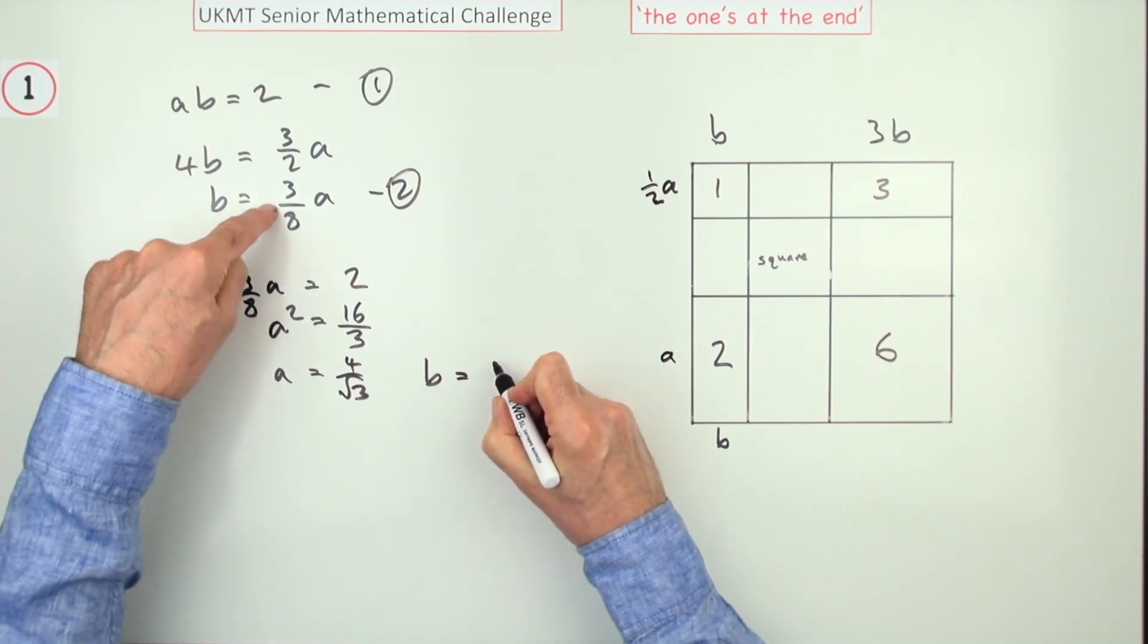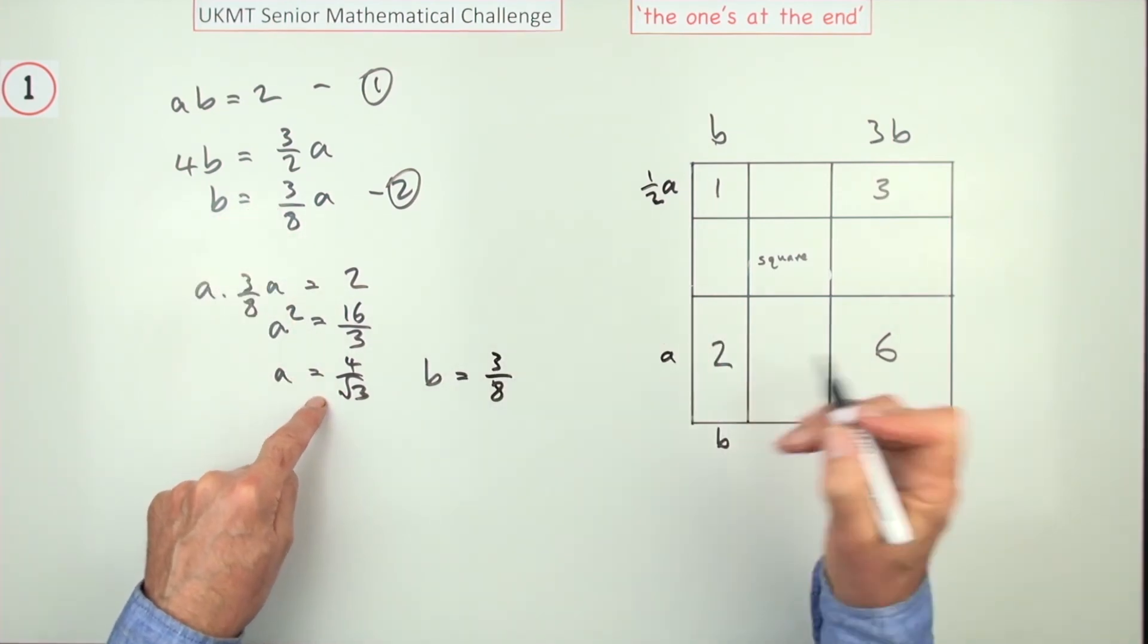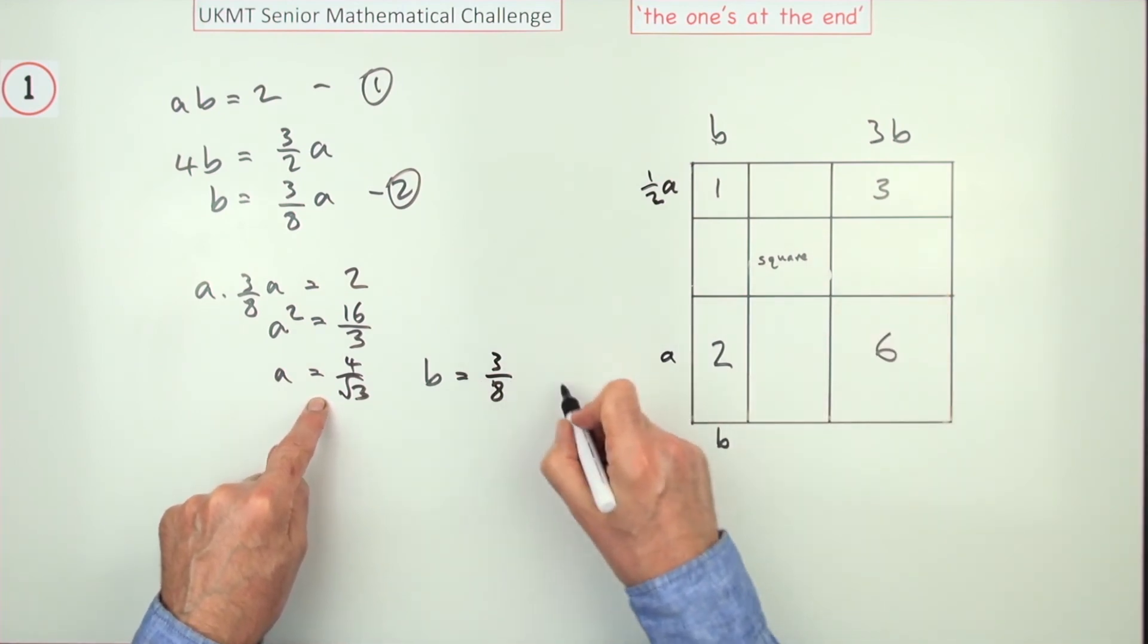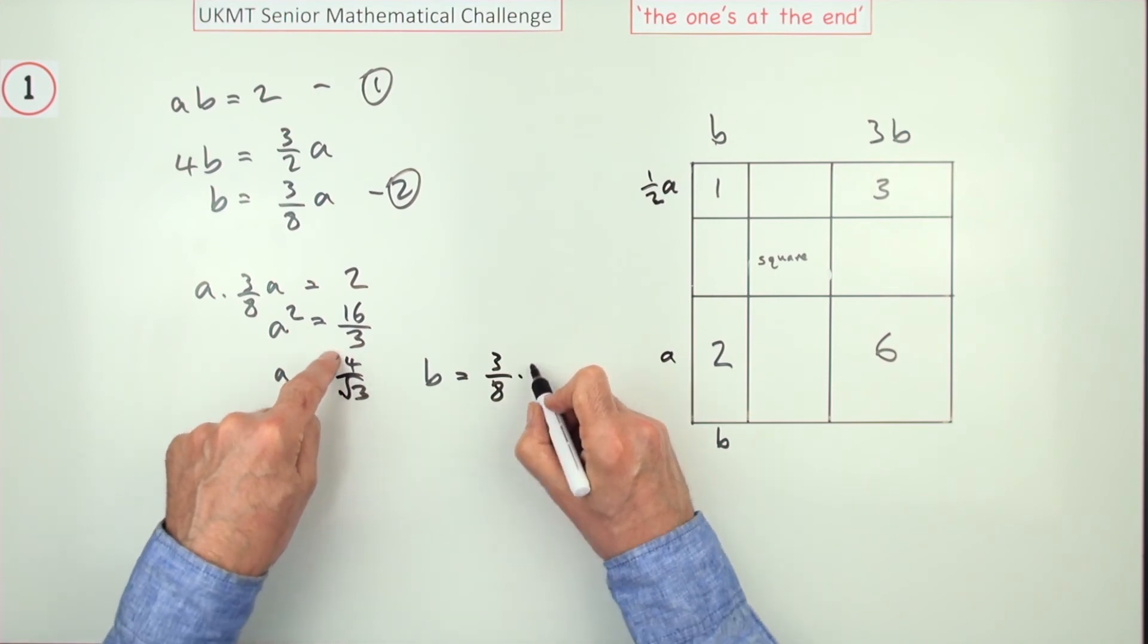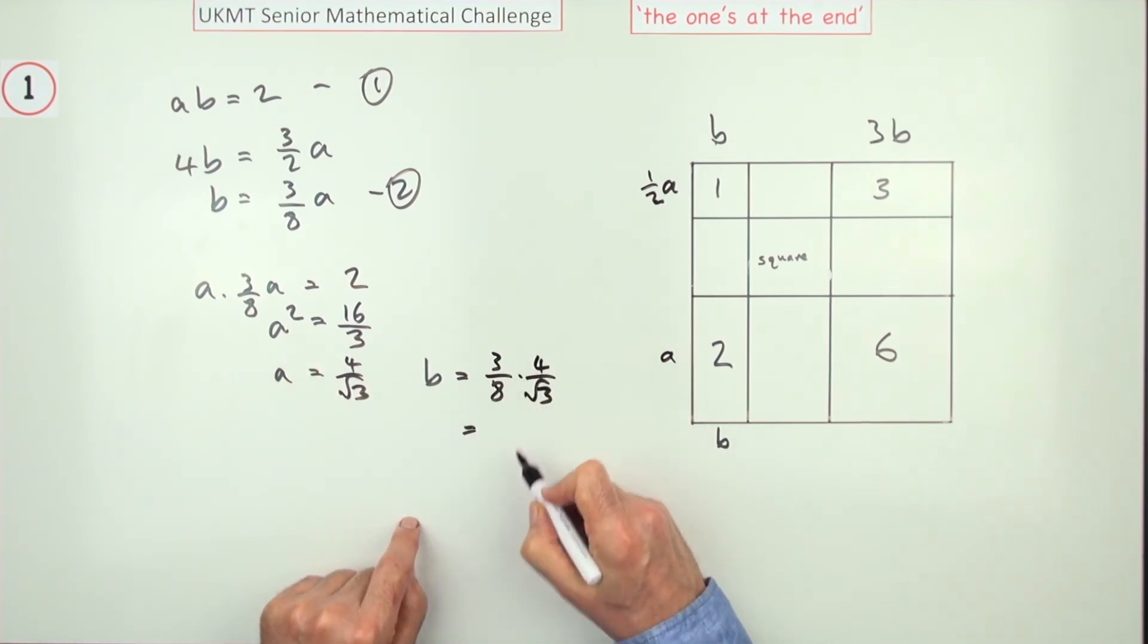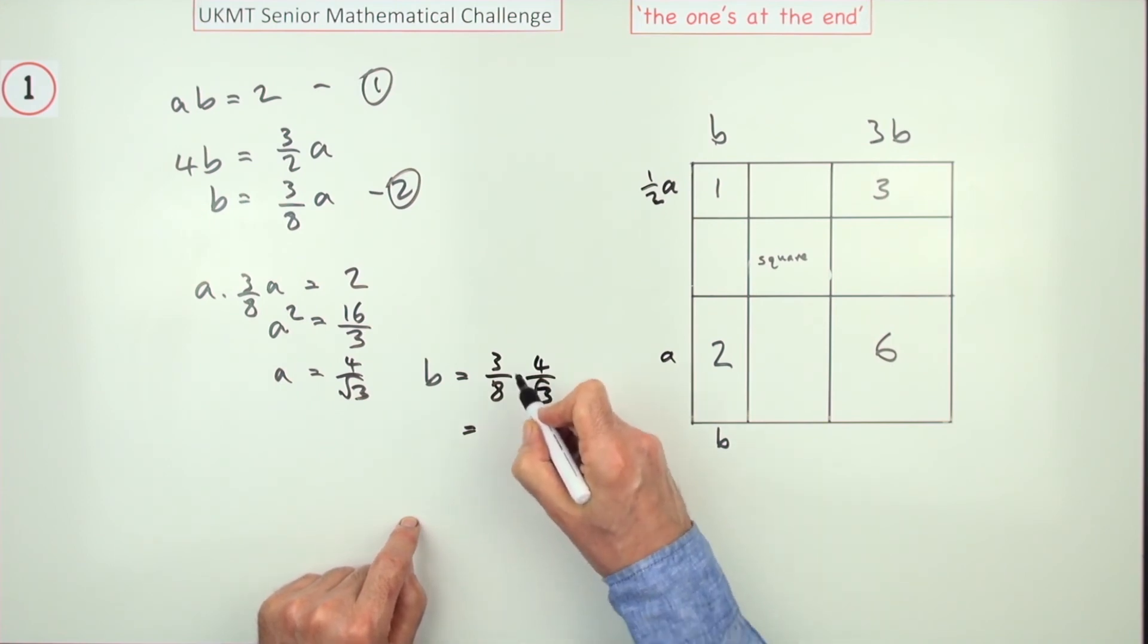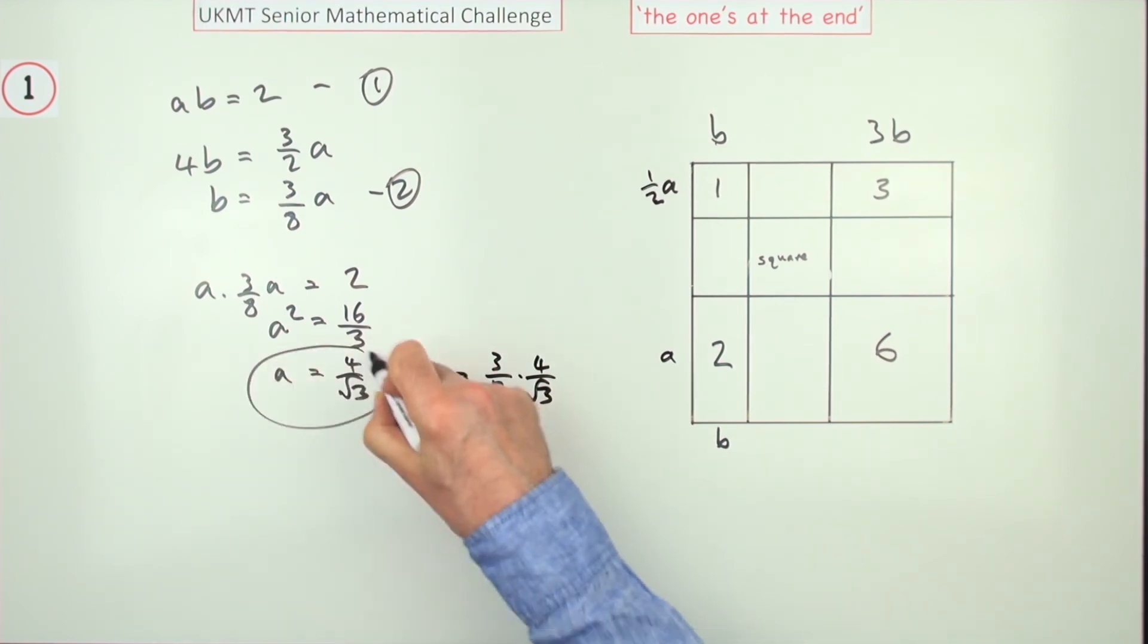And then to get b, I could pop back up here. So b is going to be three eighths of this. Again, you could just do that in your head if you're actually doing the challenge, because you'd save a few seconds from having to write down this, which is effectively just an explanation. Three eighths of this: three eighths of 4 upon root 3. Well, the 4 and the 8 will cancel to 2 underneath. That root 3 will divide into that 3 to give a root 3. So b equals root 3 upon 2. Now you've got the two lengths.